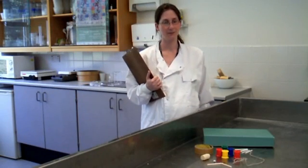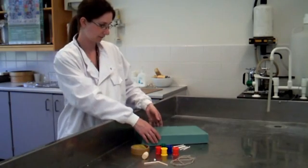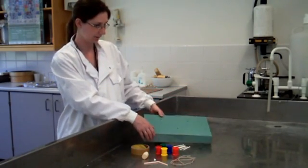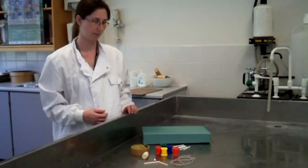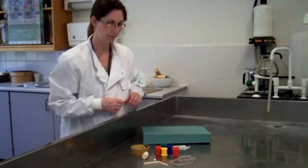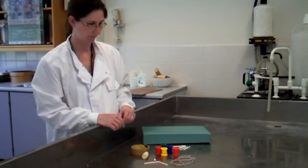This experiment demonstrates how to create a pulley system. You will need a cardboard box lid with holes cut into it, some wooden dowels, cotton reels, and string.